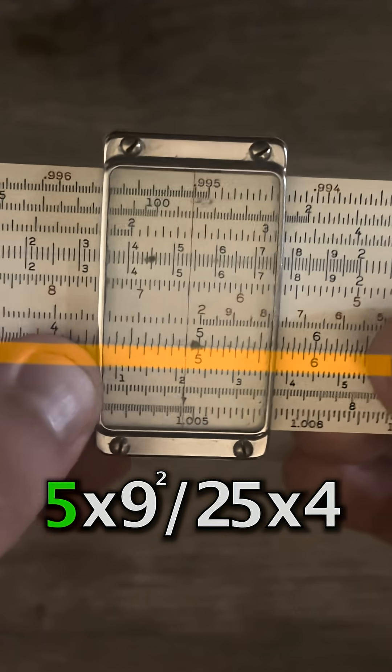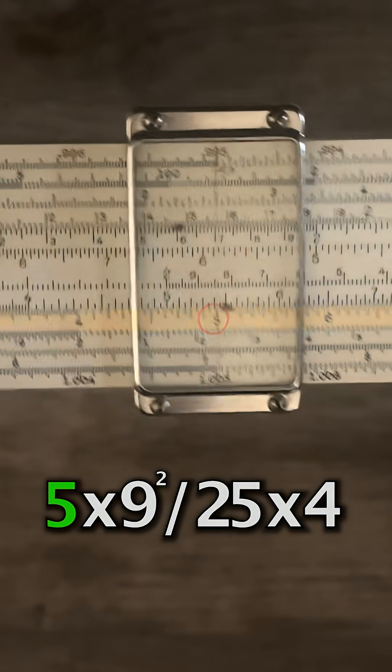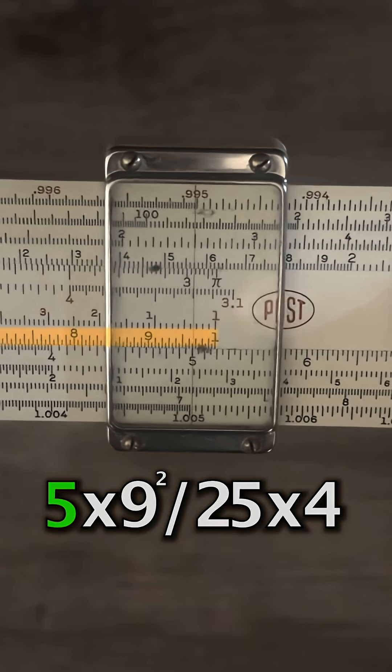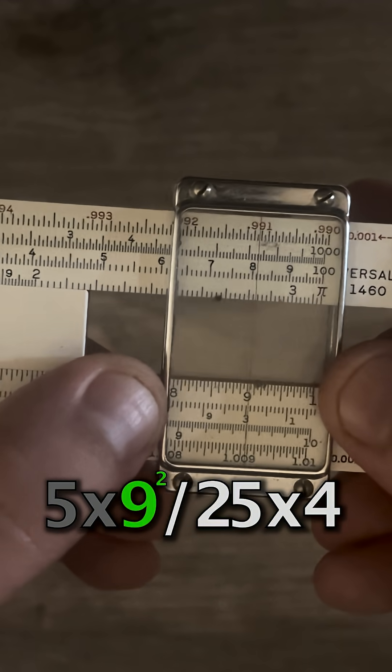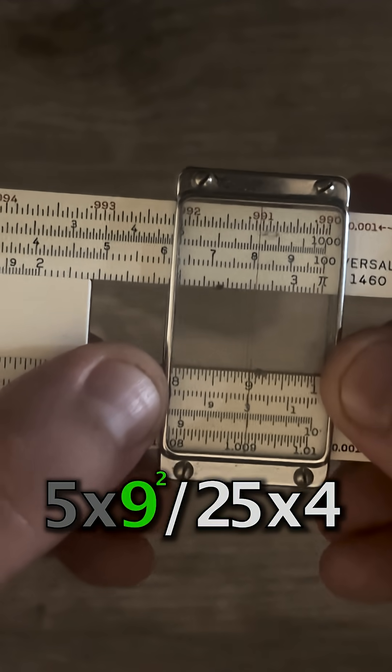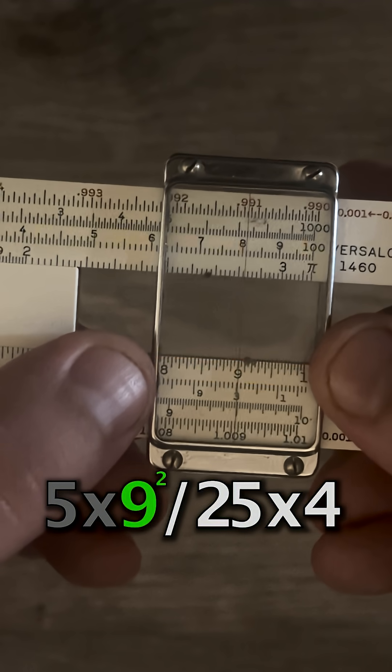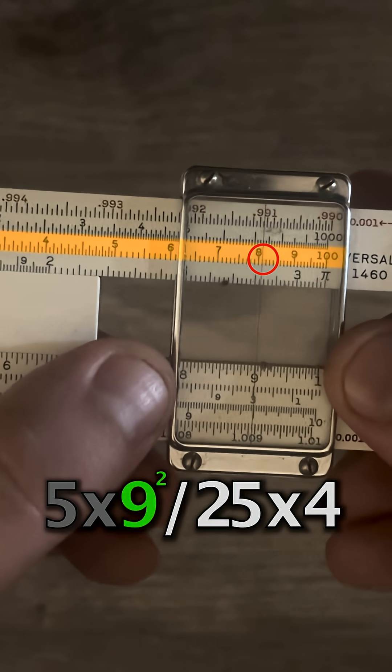So let's start with the first number 5. I'll find 5 on the d scale, set it there, and we're going to multiply, so I'm going to put my right index to 5. Now, next step, we want to find 9 squared, and you can do it in your head, but just so you know how to do it on the slide rule, we'll go to 9 on the d scale, and that'll give us 81 on the a scale.